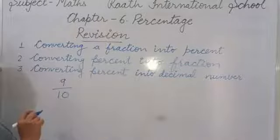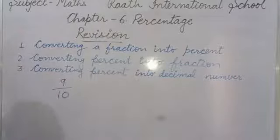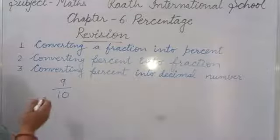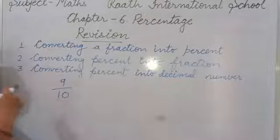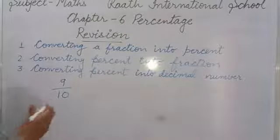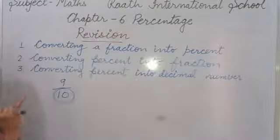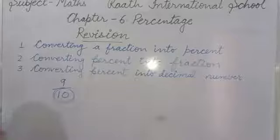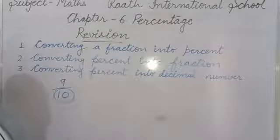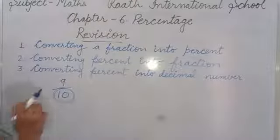One method is that, because percent means out of 100, you will make your denominator 100. How we make it 100? By taking an equivalent fraction — we multiply numerator and denominator by the same digit so that the denominator becomes 100.